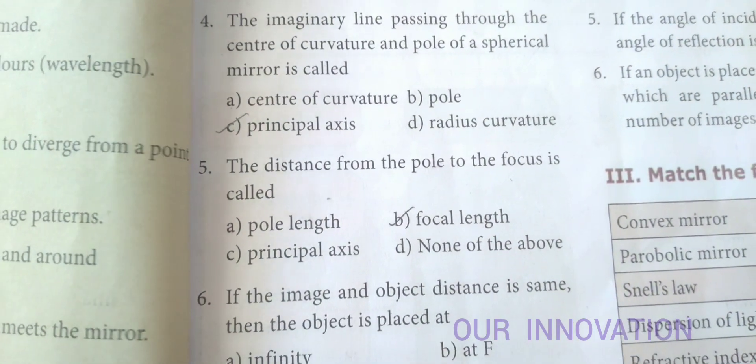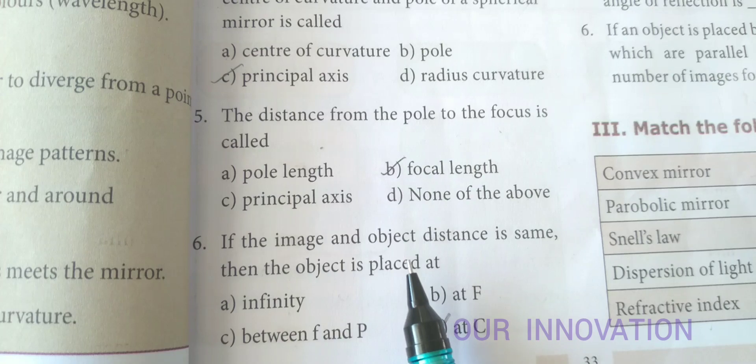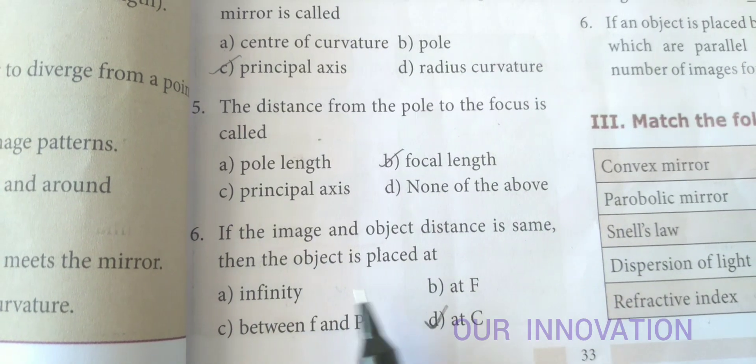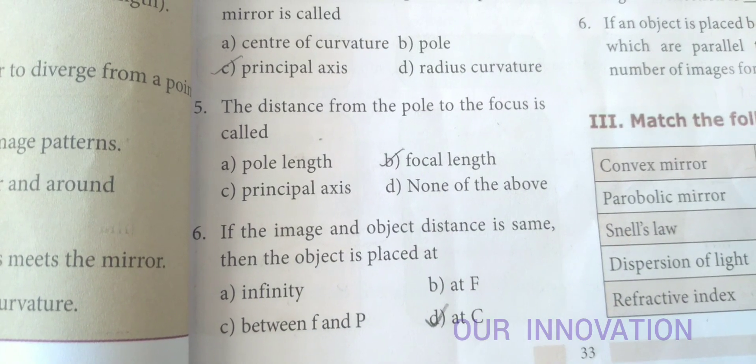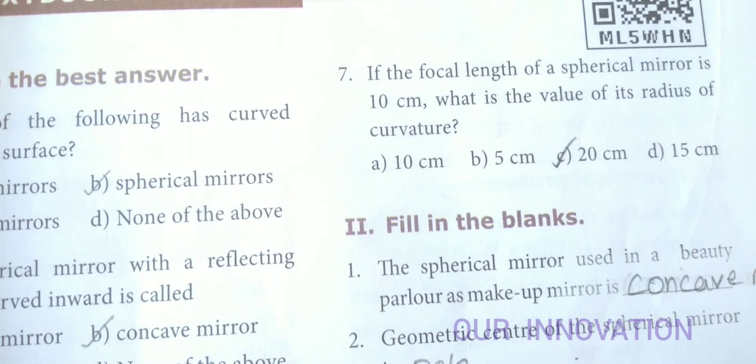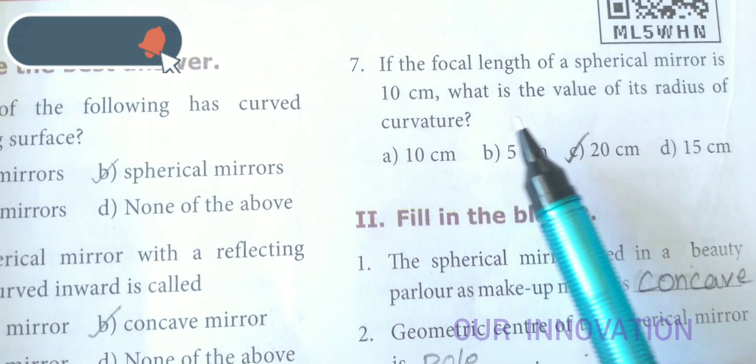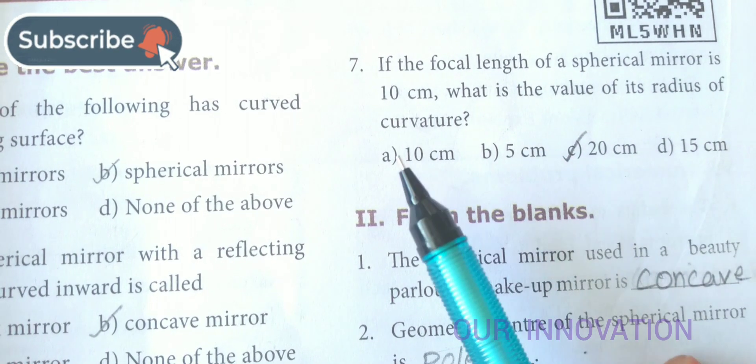If the image and the object distance is same, then the object is placed at C. The focal length of the spherical mirror is 10 cm. What is the value of its radius of curvature?